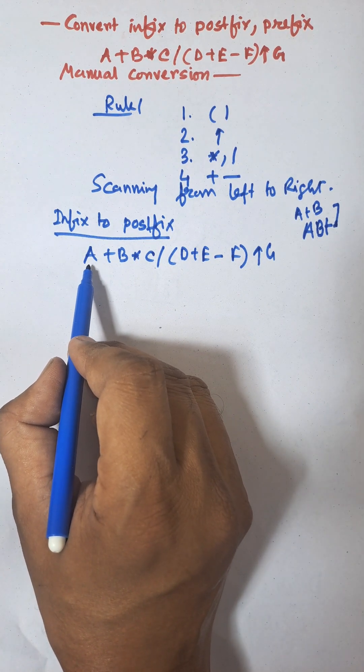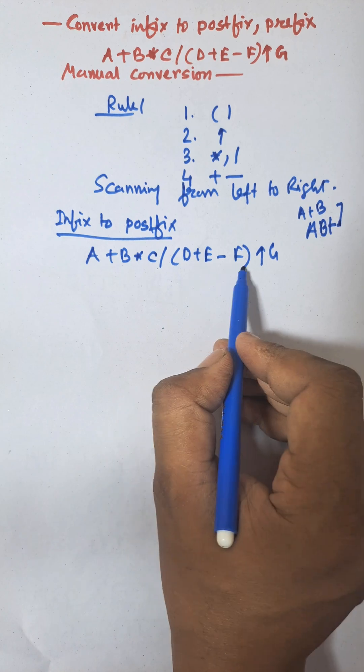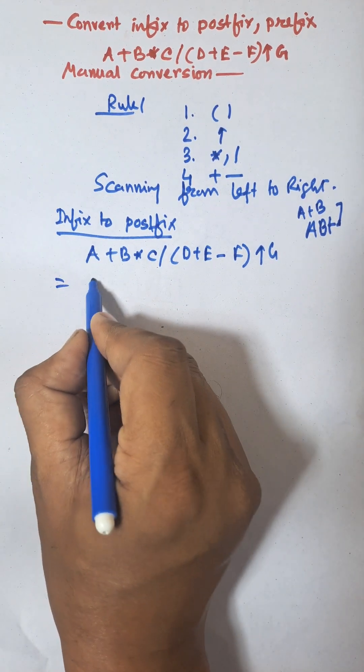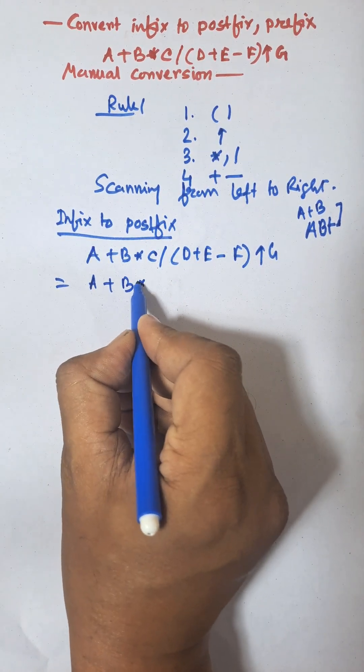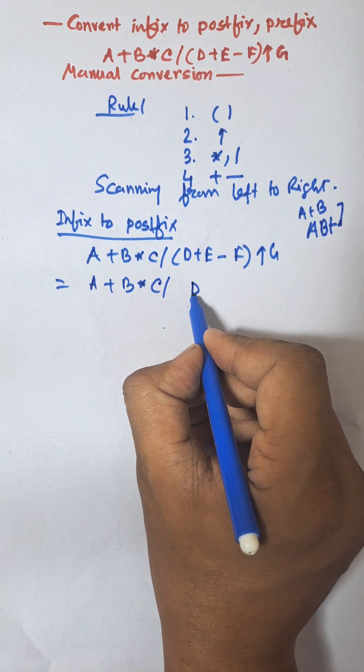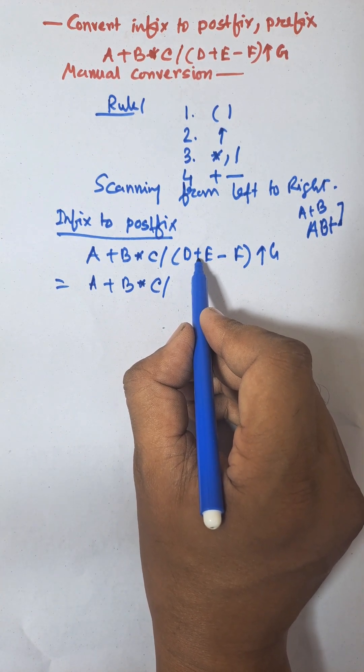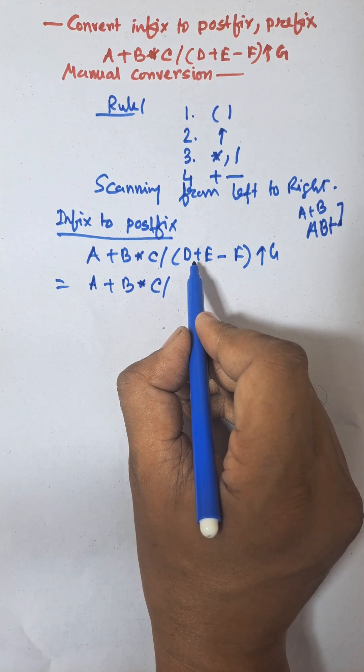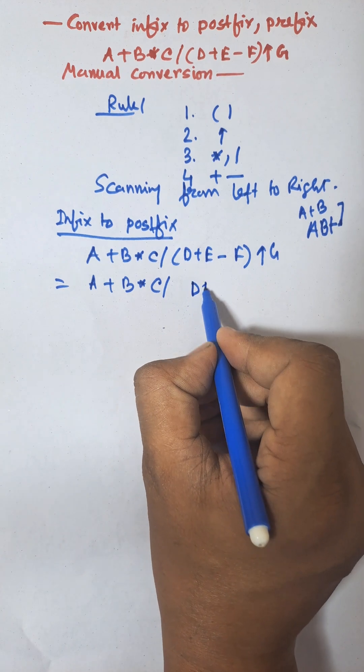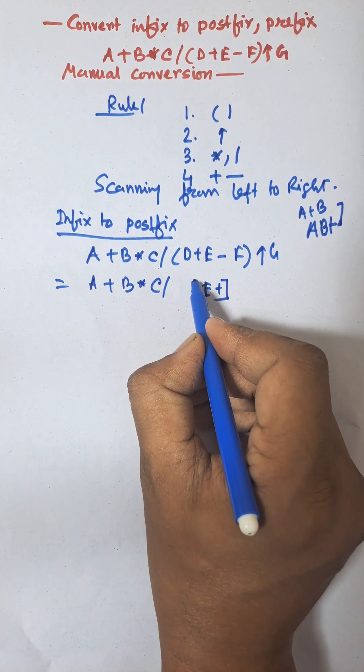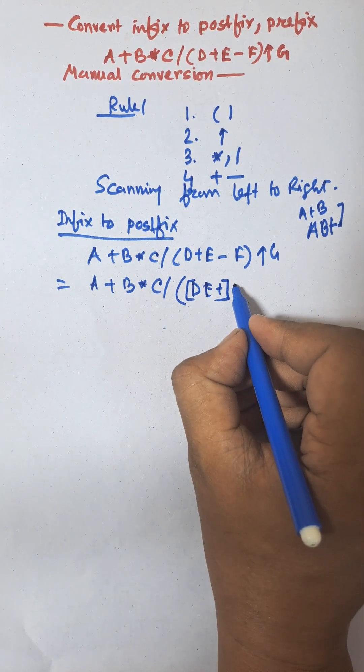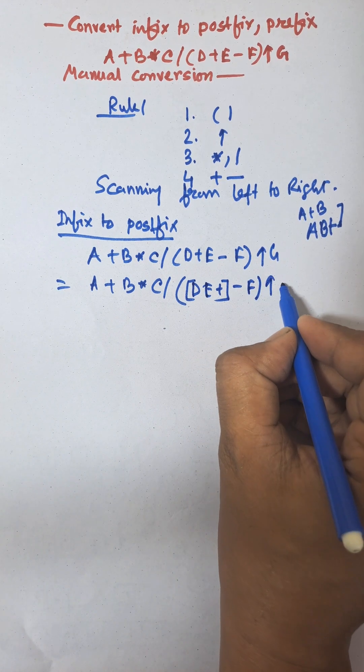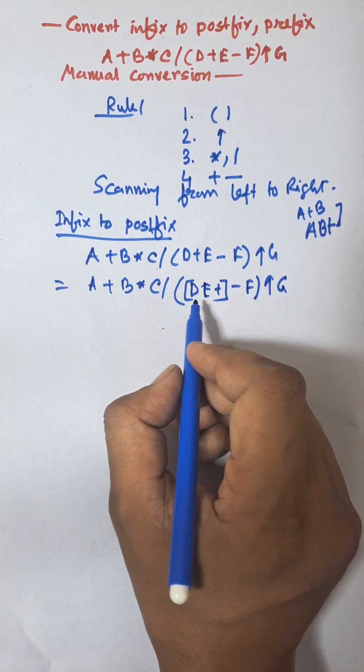Now, according to rule, scanning from left to right, the priority of bracket is first. So we will perform A plus B into C divided by bracket D plus E minus F. Among the bracket, there is a plus and minus. According to rule, the plus will be performed first: D E plus. We need to lock this. Remember, locking will prevent data loss.